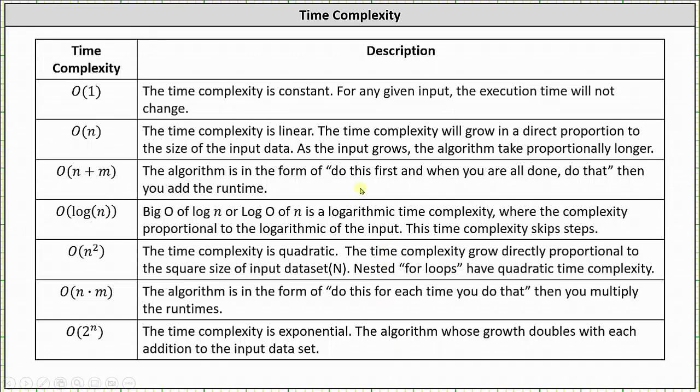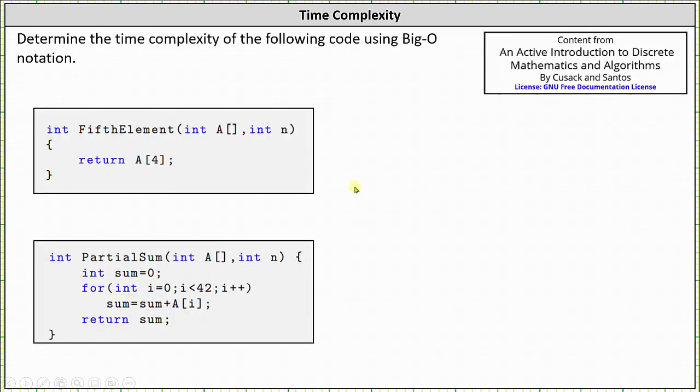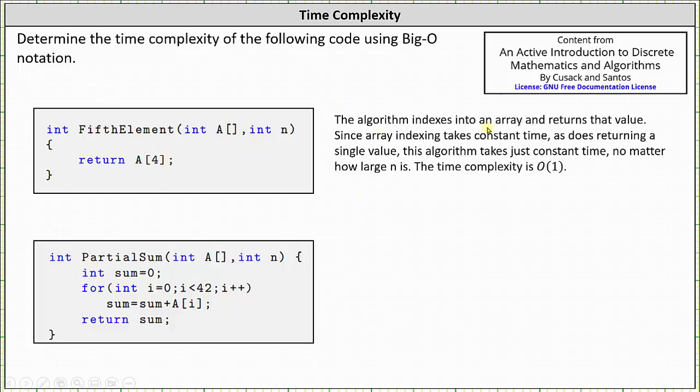And now let's look at our first example. Analyzing the code, the algorithm indexes into an array and returns that value. Since array indexing takes constant time, as does returning a single value, this algorithm takes just constant time no matter how large n is. The time complexity is big O of one.